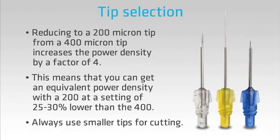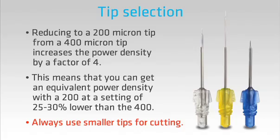Now let's think about which tip to select. Tips come in different lengths as well as in different sizes. Because of the inverse square law, changing to a 200 micron tip from a 400 micron tip halves the diameter of the laser spot and concentrates the beam, so it increases the power density by a factor of 4. When we change to a larger tip, the reverse is true — we spread the energy out in a greater space. This means you get similar power densities on tissues from lower power settings by using smaller tips. Always use smaller tips for soft tissue cutting. Keep the bigger tips for when you don't want to cut tissue, such as when troughing around a crown prep to get haemostasis or for periodontal disinfection.